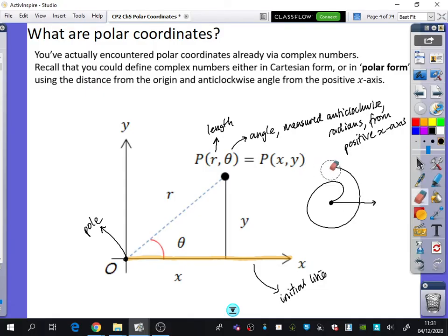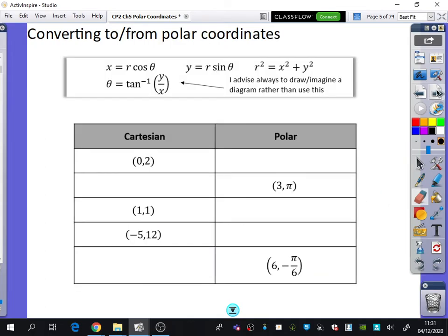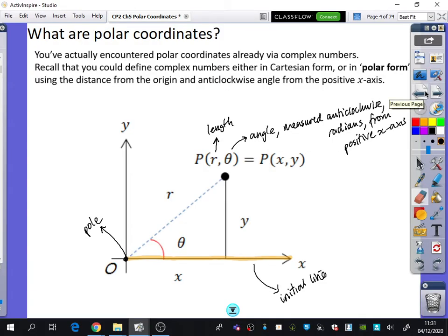We're now going to try and do some conversions between the different coordinates. So we know that x equals r cos θ, and y equals r sin θ, and r² is x² + y². Just as a quick reminder of why that's true, if you just think about this triangle that you've got here, the hypotenuse is r.